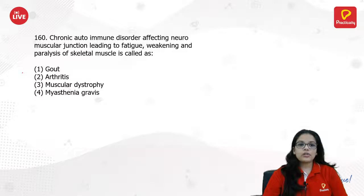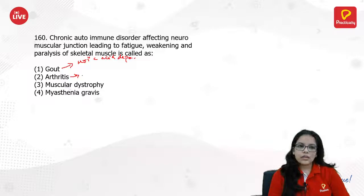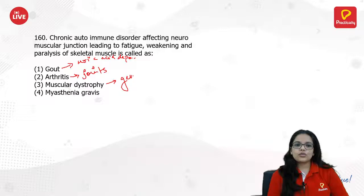Chronic autoimmune disorder affecting the neuromuscular junction leading to fatigue, weakening and paralysis of skeletal muscle: gout involves uric acid deposition in joints. Rheumatoid arthritis is autoimmune but affects joints. Muscular dystrophy is a genetic condition. The answer is myasthenia gravis.